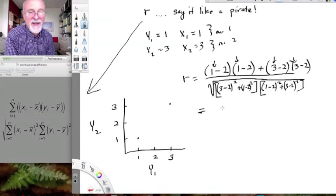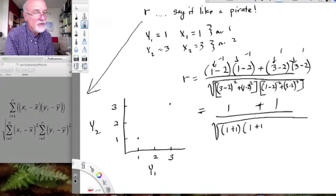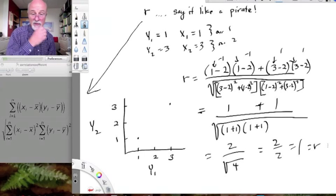Okay so we have 1 minus 2 times 1 minus 2, that's minus 1 times minus 1. What's minus 1 times minus 1? That's 1. And then we have 1 times 1, that's 1, okay. And then we have the square root of 1 plus 1 times 1 plus 1. I'm just doing this in my head here, right? Equals 2 divided by the square root of 2 times 2, 4. Equals 2 over 2 equals 1. And we already knew that was going to be the answer, right?